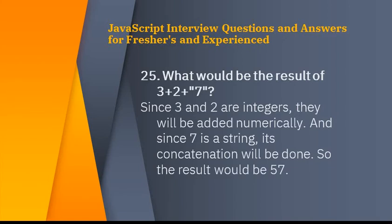Since 3 and 2 are integers they will be added numerically, and since 7 is a string, concatenation is done. So the result would be '57'.